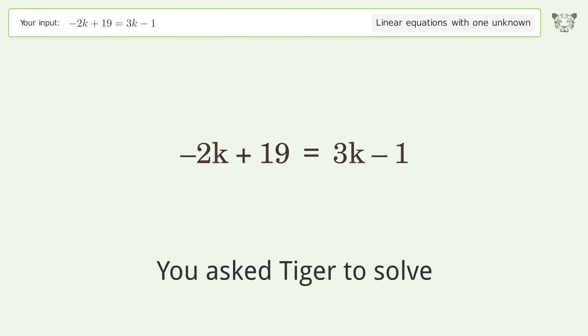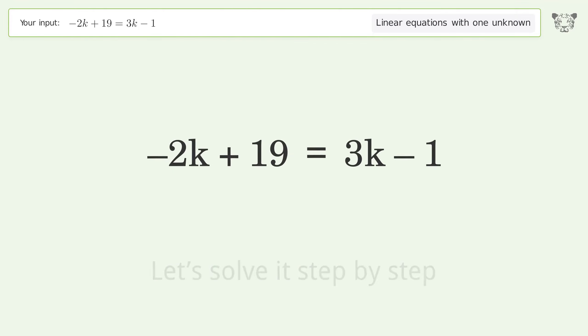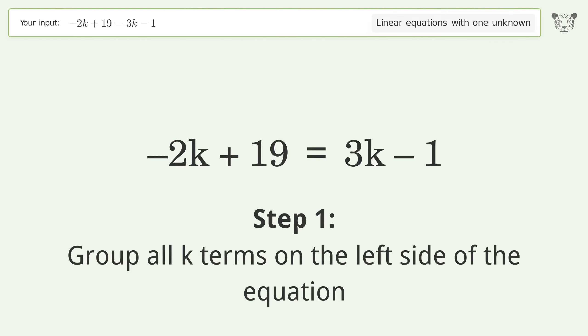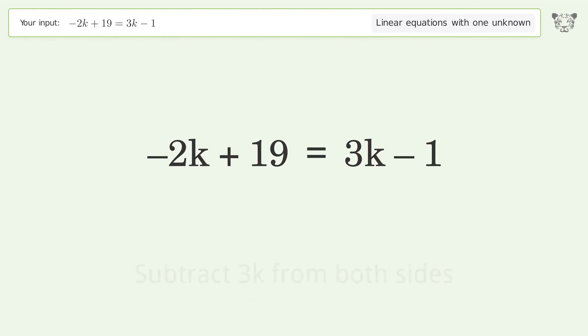You asked Tiger to solve this. It deals with linear equations with one unknown. The final result is k equals 4. Let's solve it step by step. Group all k terms on the left side of the equation. Subtract 3k from both sides.